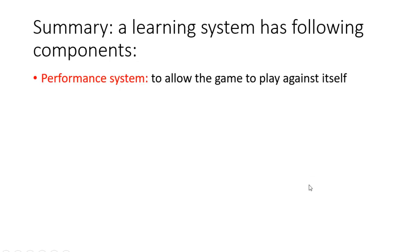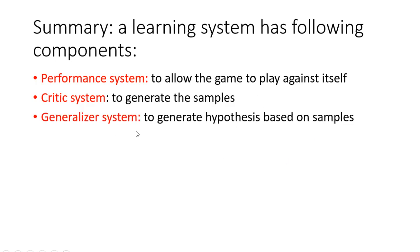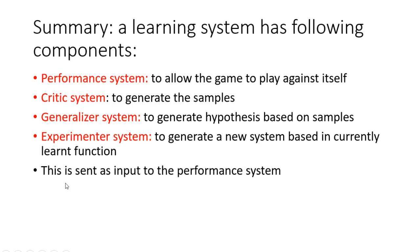To summarize, a learning system should have the following components: a performance system, which allows the game to play against itself; a critic system, which generates the samples; a generalization system, to generate the hypothesis based on samples; and an experimental system, to generate a new system based on the currently learned function, which is then sent as input to the performance system. These are the basic components of a learning system.